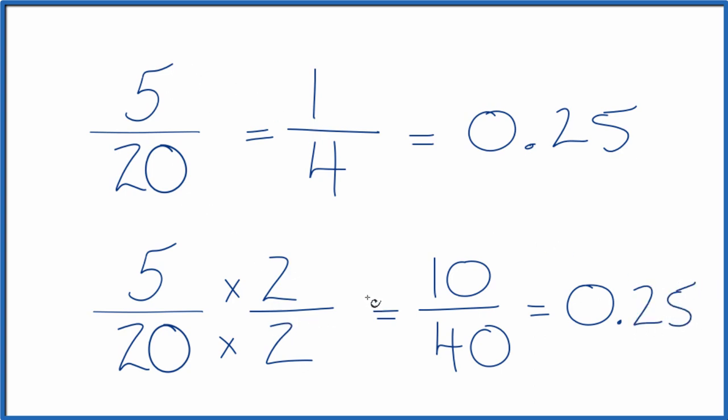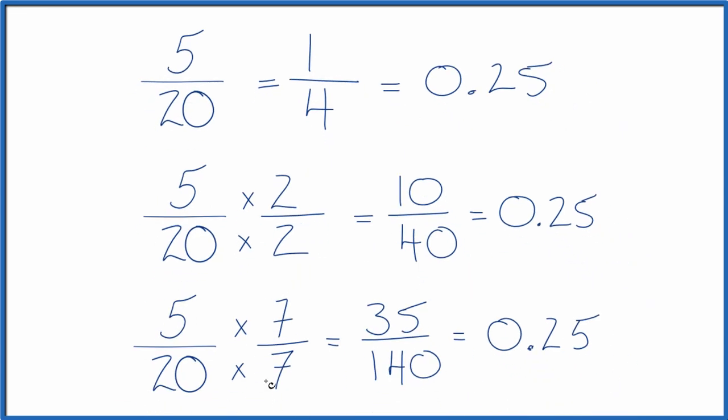One last one. So here we multiplied by 7 over 7, but 7 divided by 7 is just 1, didn't change the value, it's still 0.25. But now we have the equivalent fraction, 35 over 140.